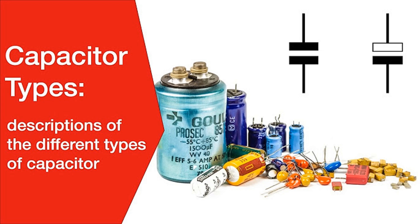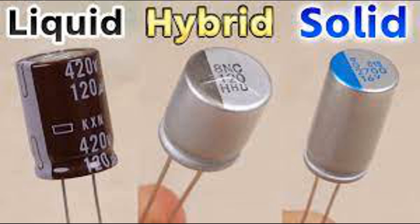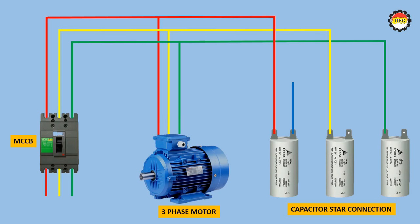Detuned capacitors are tuned to a frequency that is typically higher than the fundamental frequency of the electrical system. This tuning ensures that the capacitors do not resonate with the harmonic frequencies present in the system, preventing amplification of harmonic currents and voltages. Detuned capacitors selectively filter out specific harmonic frequencies, typically the lower-order harmonics such as the 5th and 7th harmonics, which are commonly found in industrial and commercial electrical systems. By targeting these specific harmonics, detuned capacitors help reduce harmonic distortion to acceptable levels.